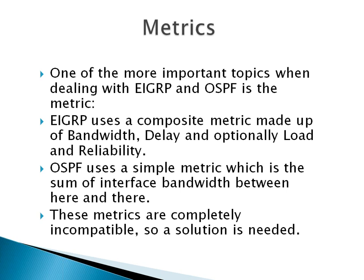The metric is the main thing to consider for redistribution. EIGRP uses a composite metric based on bandwidth and delay by default — you can optionally include load and reliability. This gets plugged into a fairly complex formula and comes out with a seemingly large random number. OSPF uses a much simpler metric — just the sum of interface bandwidth costs between your current router and the destination network. These metrics are totally incompatible, so you need a way to make them work when you take routes from one IGP into another.